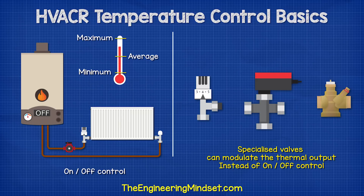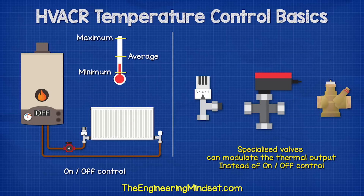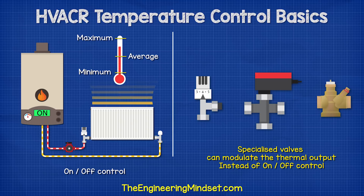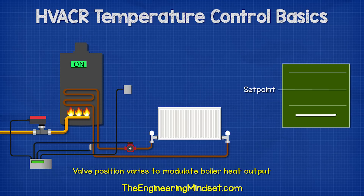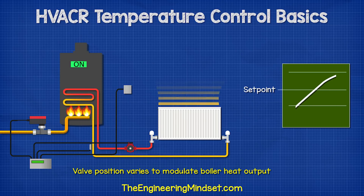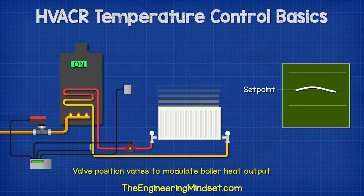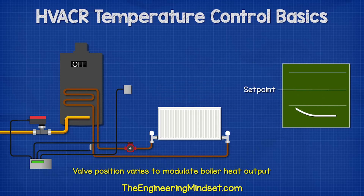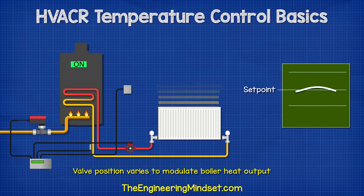On and off control makes it difficult to maintain a desired temperature. Instead, we can use special valves to modulate the thermal output, keeping the temperature within a certain deadband. In a simple heating system, when the gas boiler turns on, it will run at full power to heat the water, but then it reduces the gas supply by using a motorised valve. This reduces the heat output of the boiler rather than turning it off. The water temperature set point is kept in the deadband, so the heat output is equal to the heat leaking out of the room.